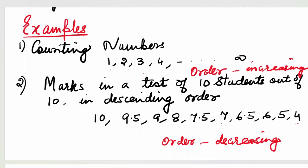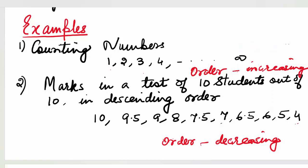We are familiar with counting numbers. Counting numbers are 1, 2, 3, 4, they go up to infinity. First of all, they are a collection of numbers, and these numbers are arranged in an increasing order, so they form a sequence. We don't write counting numbers as 2, 1, 5, 9 — they are written as 1, 2, 3, 4. There is a certain order. They are in an increasing order, so these counting numbers form a sequence.